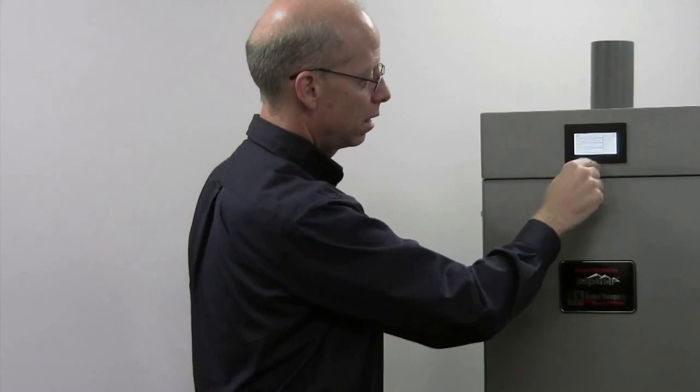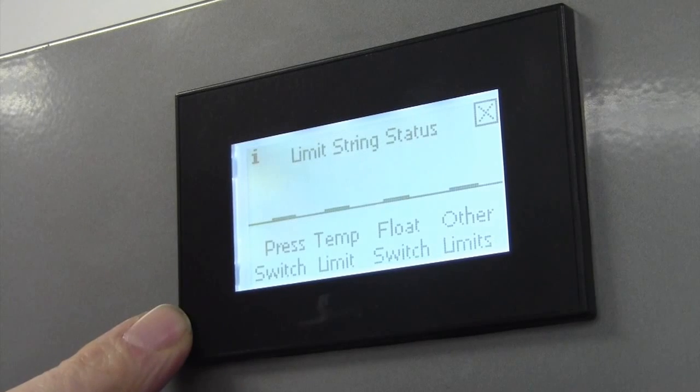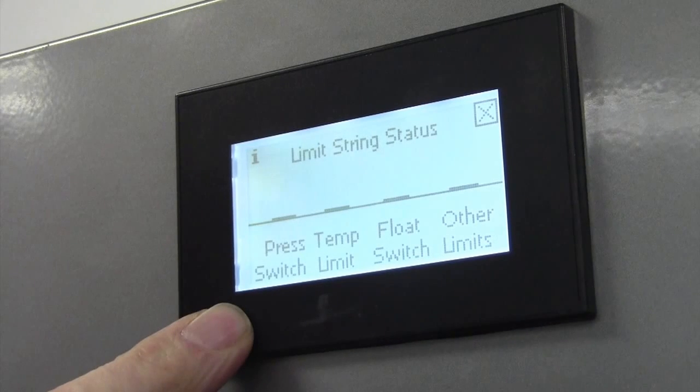We gave a lockout history, but we were limited to five lockouts. Our new display, as I'll show, has ten, and it gives you more information about each lockout. On this display, we gave information about the open limit circuit, but we were limited to how we could describe what the open limit was. Now we can be very specific about what the open limit was.